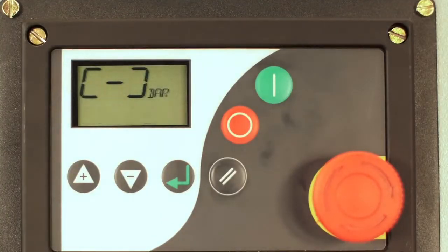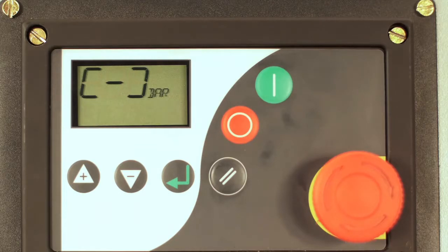The error code EO115 indicates the fault in pressure sensor. Check the voltage between ground and contact points.